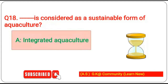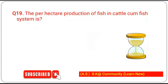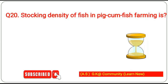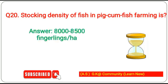Nineteenth question: per hectare production of fish in cattle-cum-fish system is 3000 to 4000 kg of fish per hectare per year. Twentieth question: stocking density of fish in pig-cum-fish farming is 8000 to 8500 fingerlings per hectare.